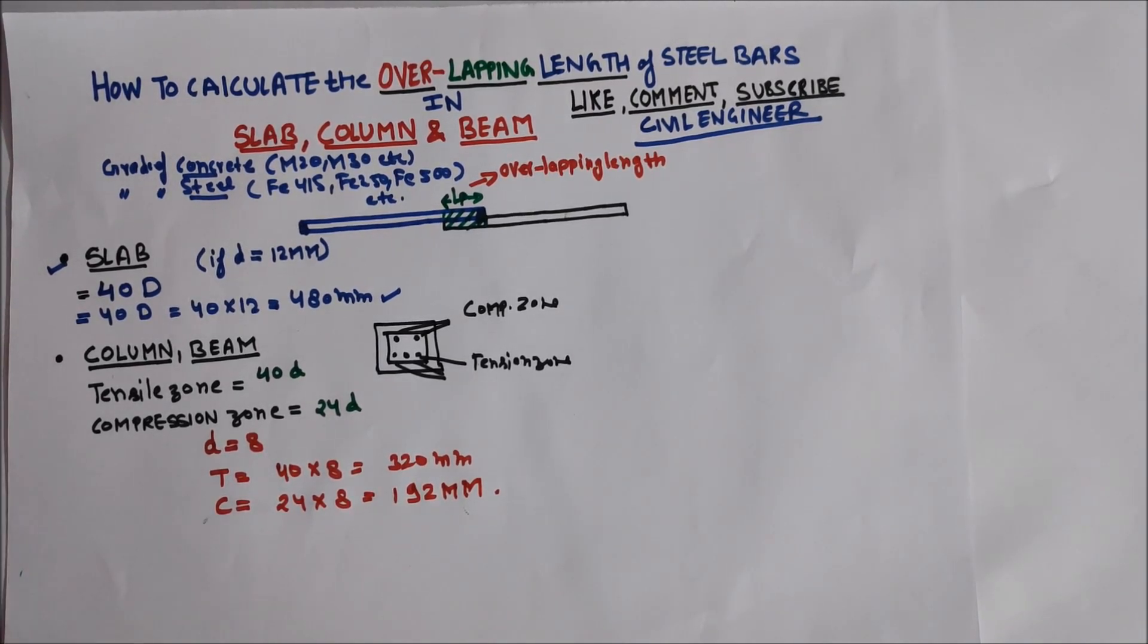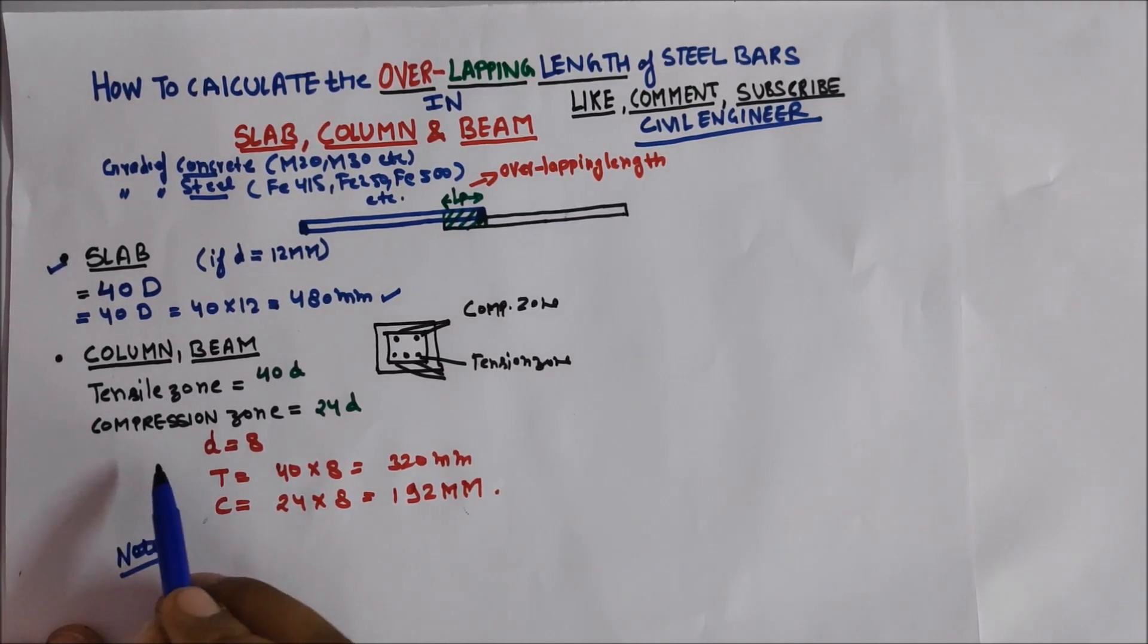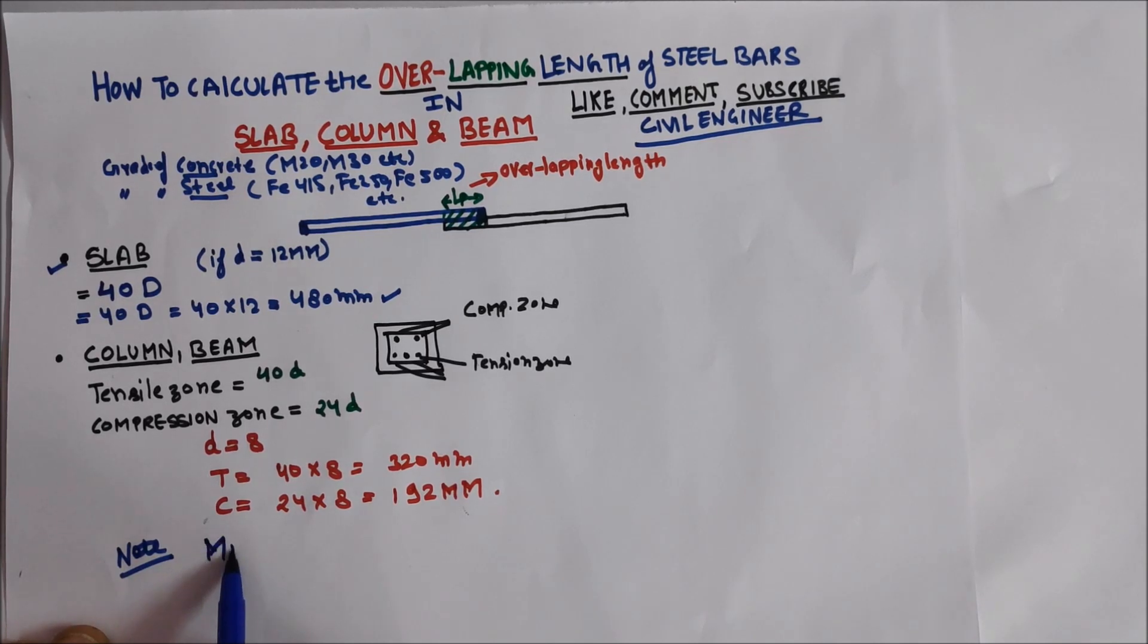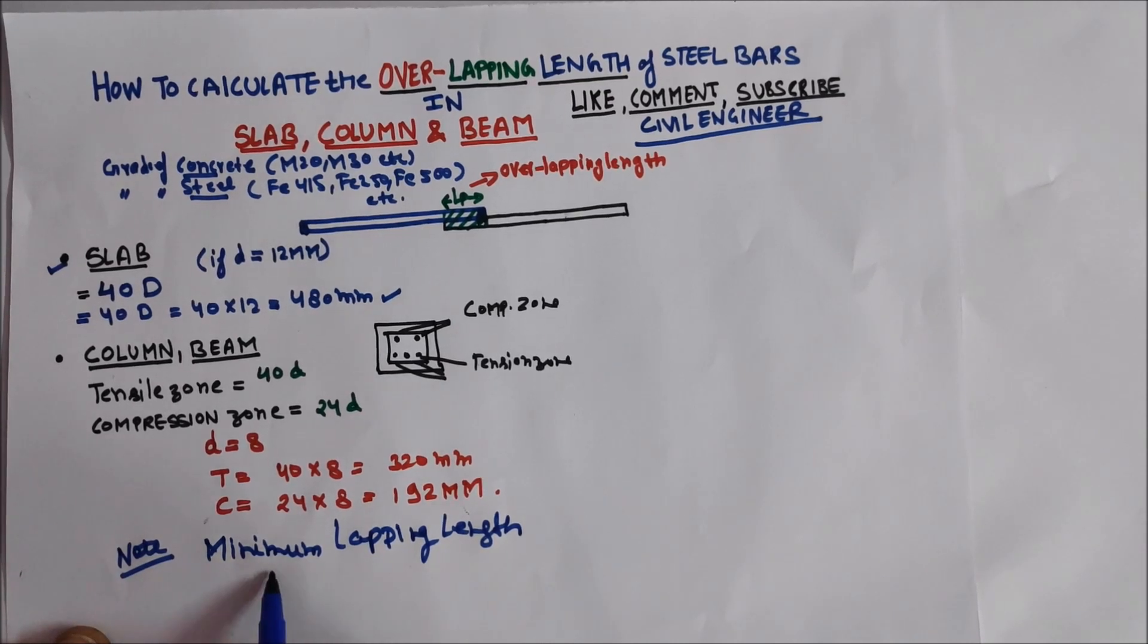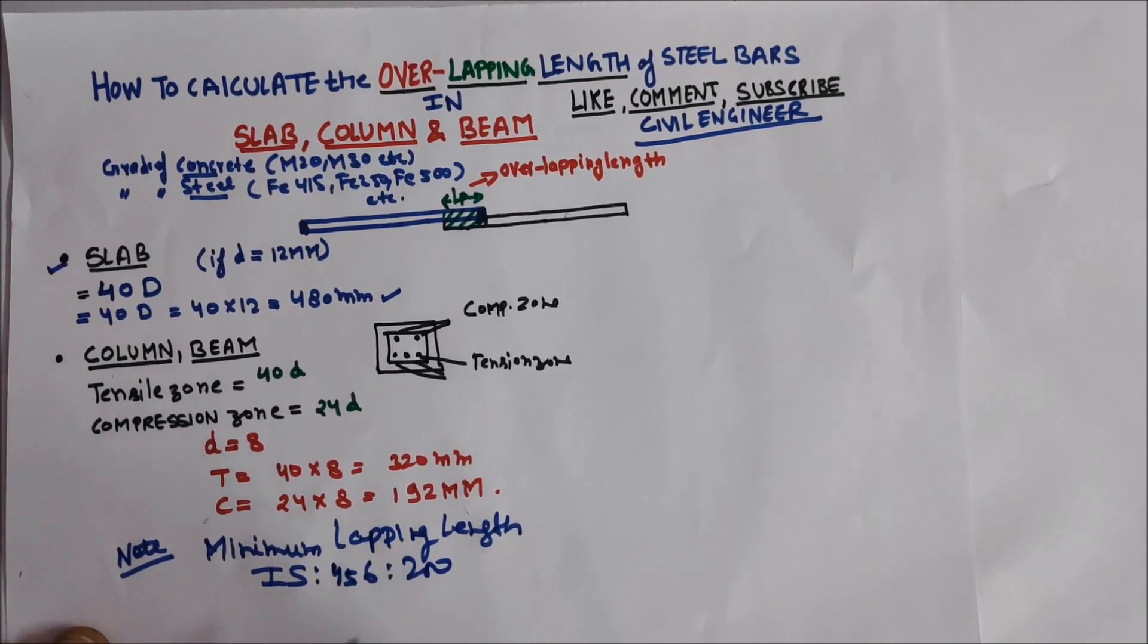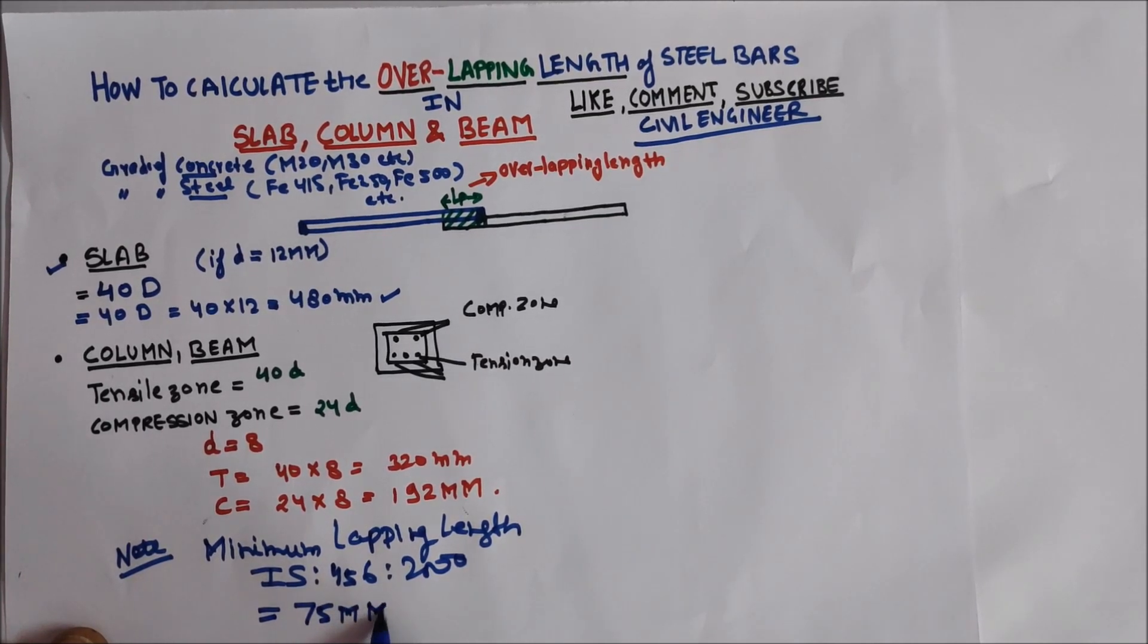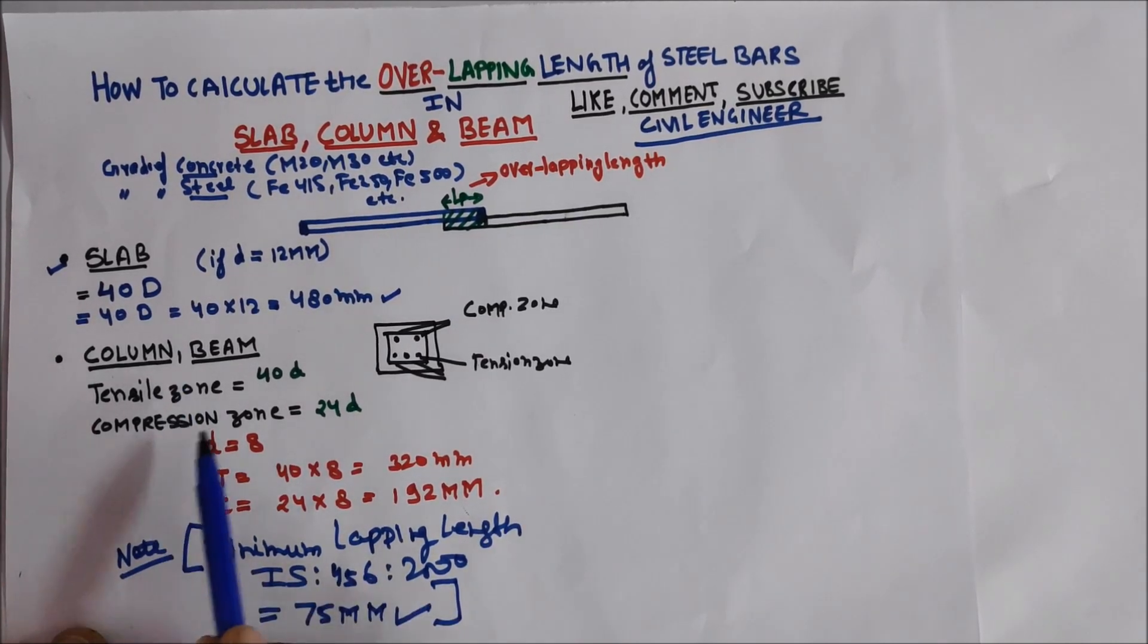Important note: In any case—tension, compression, or slab—minimum lapping length according to IS 456:2000 will not be less than 75mm. This is important: minimum lapping length in any case will not be less than 75mm.